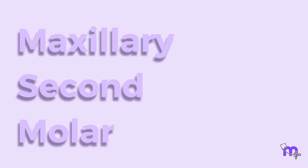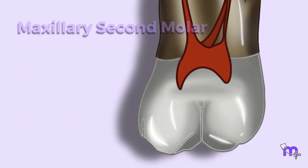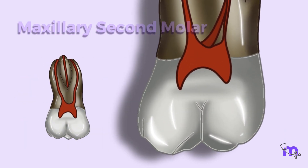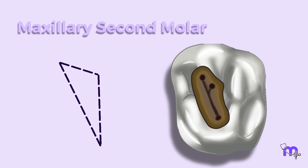Now let's continue with the maxillary second molars. The pulp chamber is similar to the first molar, except that it is narrow mesiodistally. The floor is an obtuse triangle, since the mesiobuccal and distal canals are much closer.